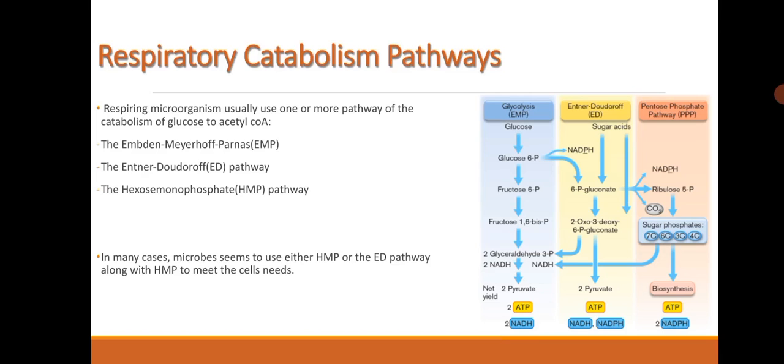Respiring microorganisms usually use one or more pathways for the catabolism of glucose to acetyl-CoA. These include the Embden-Meyerhof-Parnas pathway, the Entner-Doudoroff pathway, and the hexose monophosphate pathway. In many cases, microbes seem to use either HMP or the ED pathway along with EMP to meet the cell's needs.